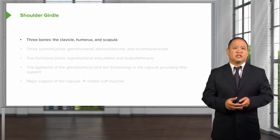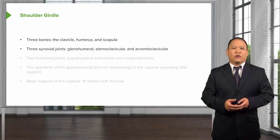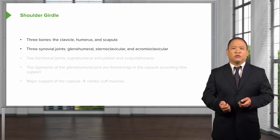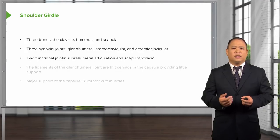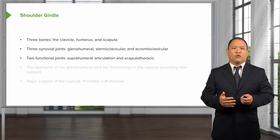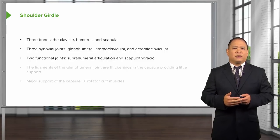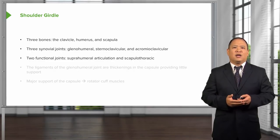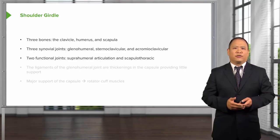Our shoulder girdle consists of three bones: the clavicle, the humerus, and the scapula. There are three true synovial joints — the glenohumeral, the sternoclavicular, and the acromioclavicular. And then there are two functional joints, meaning there is not an actual bone-to-bone articulation. These are the superhumeral space — the space between the clavicle and the head of the humerus — and the scapulothoracic, the functional joint of the scapula as it moves upon the thoracic cage.